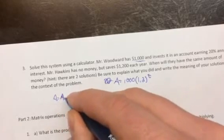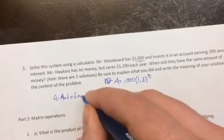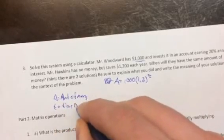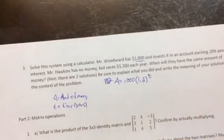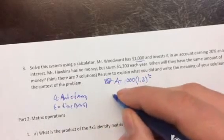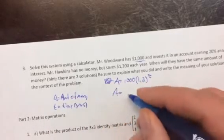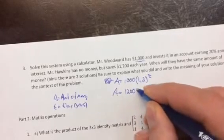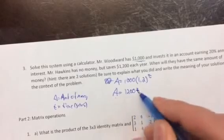Mr. Hawkins has no money but saves 1,200 dollars a year. So that should be 1,200 times t. Same variables, the amount he has is 1,200 times the number of years.